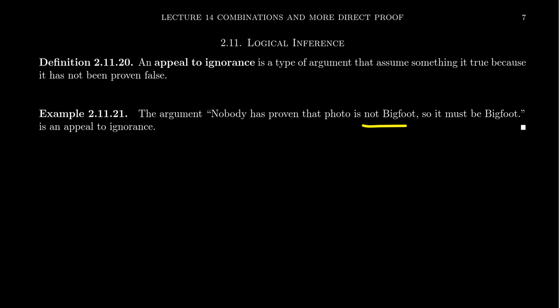This is appeal to ignorance. We don't have information yet. There's a statement. A statement is either true or false. But we might not know the truth value of the statement. And we make the argument that if it was false, someone would have proven it false by now. Or if it was true, someone would have proven it true by now. Therefore, it hasn't happened.